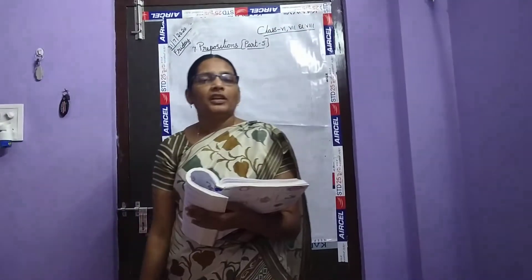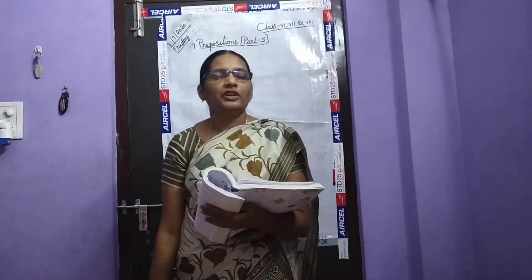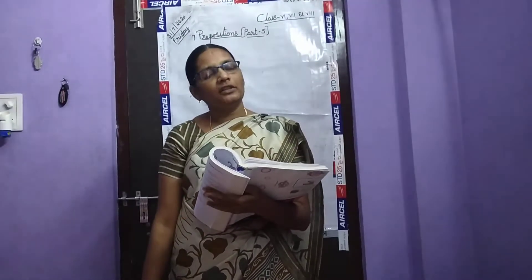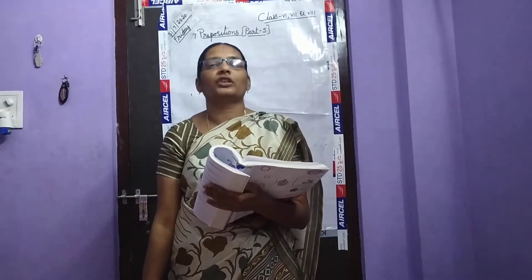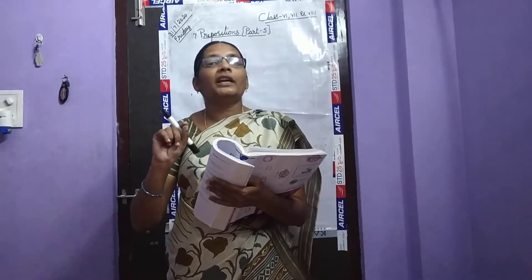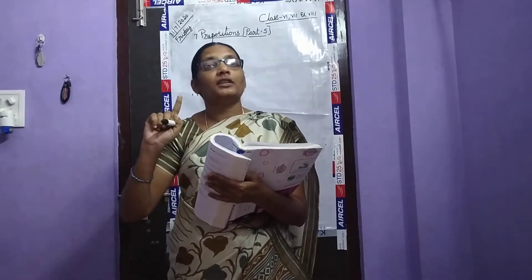Good morning children. In the previous videos we have learned about preposition of time and preposition of place. In this video we shall learn about preposition of position. What is meant by position? He is standing on the roof — that is his position. There is a flower vase on the table, so the position here is 'on the table'.